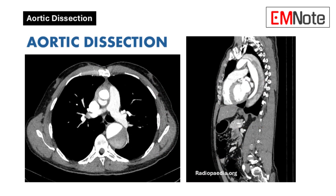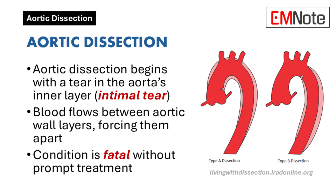Let's clarify the classification of aortic dissection types. Think of the aorta like a candy cane. Type A dissections involve the ascending aorta — the curved handle closest to the heart. Type B dissections affect the descending aorta — the long straight part after the arch where arteries branch off to the head and arms.